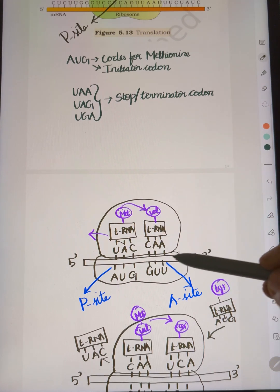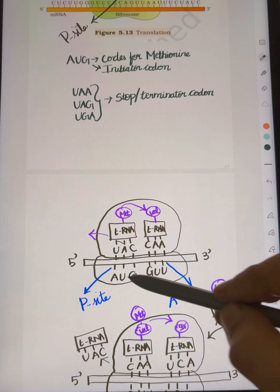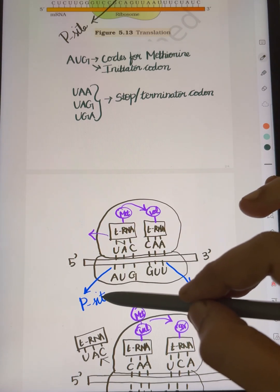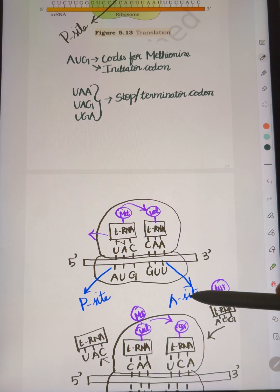In the process, the large subunit binds to create the P-site and A-site. P-site is the peptidyl site, A-site is the aminoacyl site.